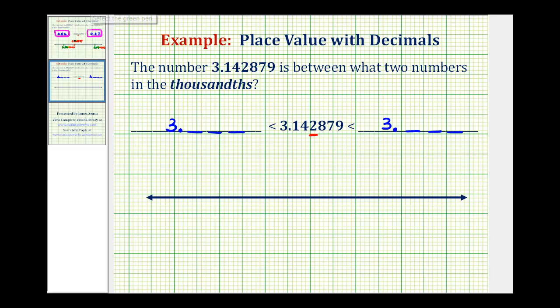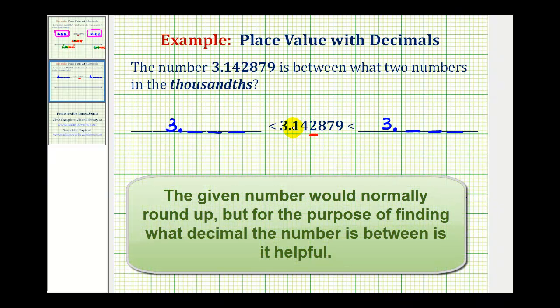So I think the best way to do this is to take a look at the given number and think how would we round this down to the thousandths place value? Well, to round down, we actually just keep this a two and drop the remaining digits to the right, giving us 3.142.